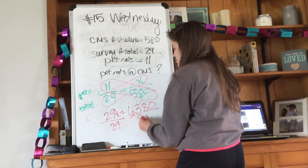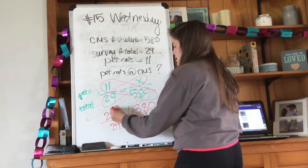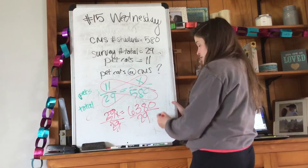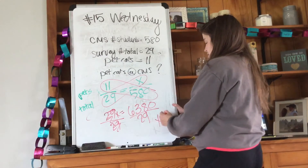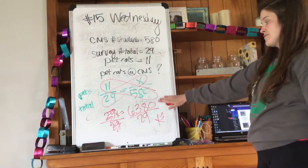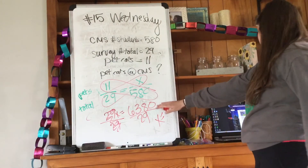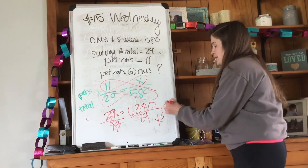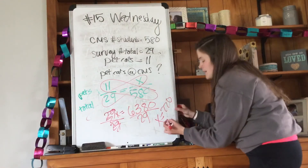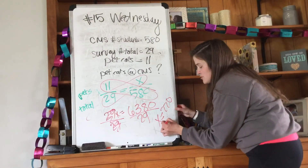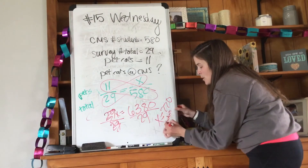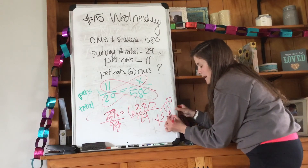Then I divide both sides by 29 to get x by itself — they cancel out and I'm left with x equals 6380 divided by 29, which gives me 220. My unit would be students with cats.